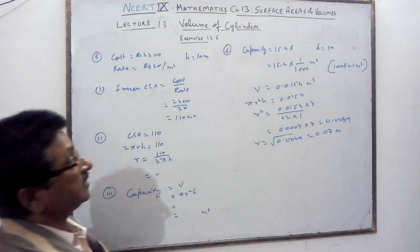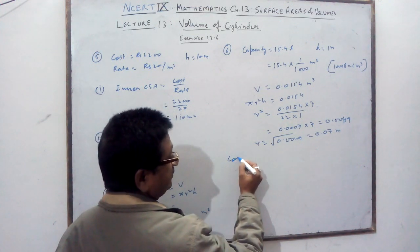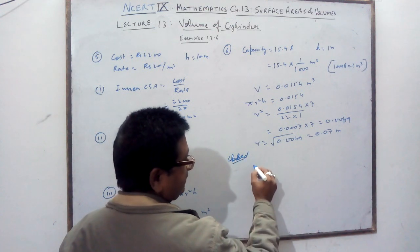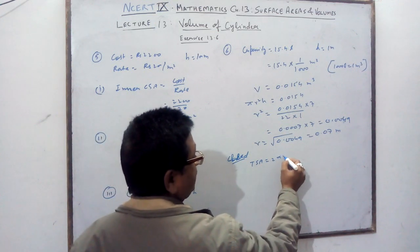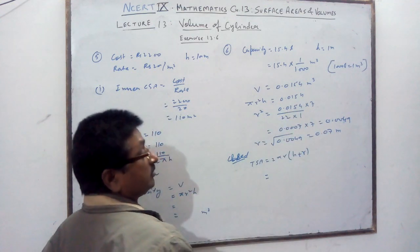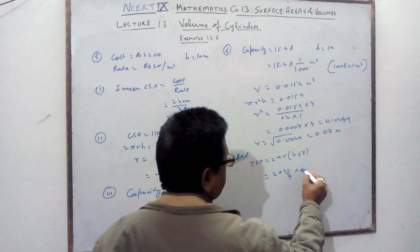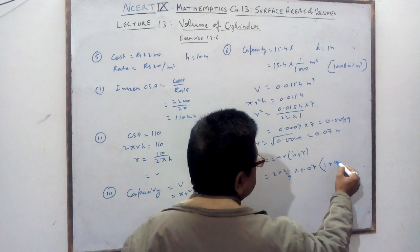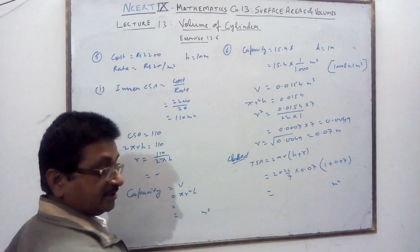Since it is a closed cylinder, you need the TSA. TSA = 2πr(h + r). Put in the values: 2 × (22/7) × 0.07 × (1 + 0.07). That gives you the total surface area in meter square — the amount of sheet required to make this vessel.